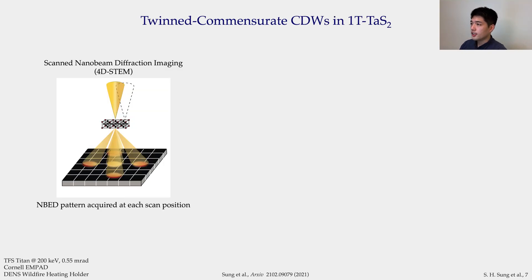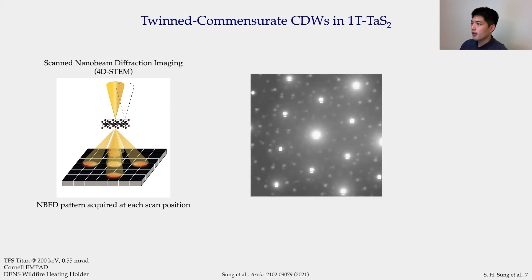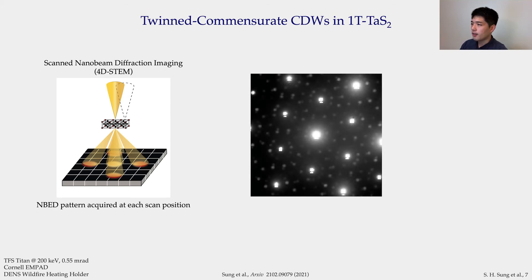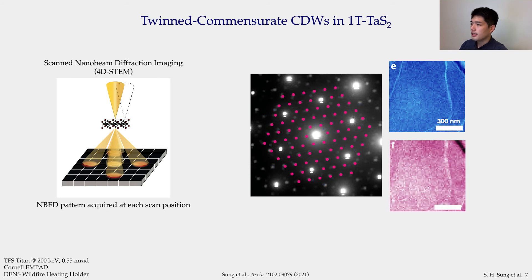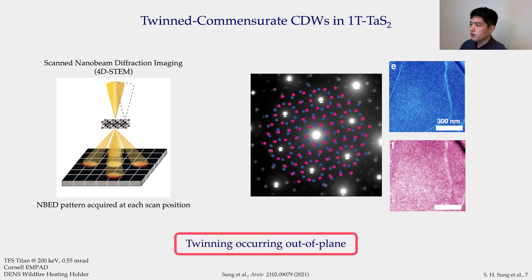To investigate the nature of the twinning, we employed 4D STEM, where a full diffraction pattern is recorded at each scan position. We converged our beam to about 4.6 nm, which covers several superlattice unit cells. Here I am showing you the position-averaged nano-beam diffraction pattern from the entire 870 nm field of view. From this 4D STEM data, we formed virtual dark field images using only the alpha peaks and only the beta peaks. Both dark field images span the entire field of view, from which we confidently conclude that the twinning is occurring out-of-plane.